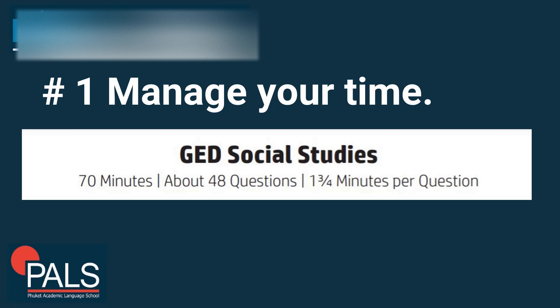Tip number one: manage your time. The test takes about 70 minutes and there will be anywhere from 40 to 48 questions, which leaves you potentially one and a half to one and three-quarter minutes per question. If you're not sure of the answers on some questions, you can mark them for review at the end. It's a good idea to save five minutes at the end of the test, keep track of the timer on the screen, and go back and do the questions you are unsure of. Remember, it's better to guess than not answer the questions at all.